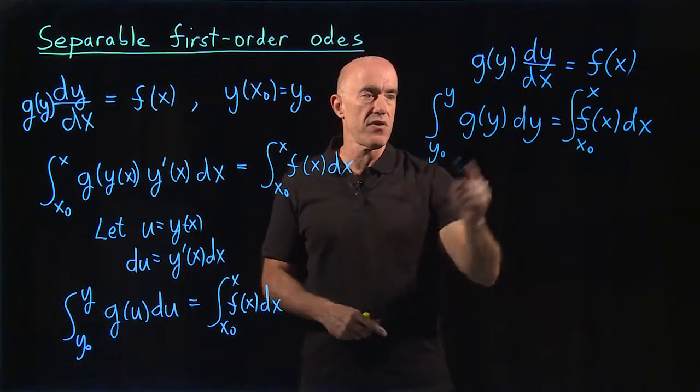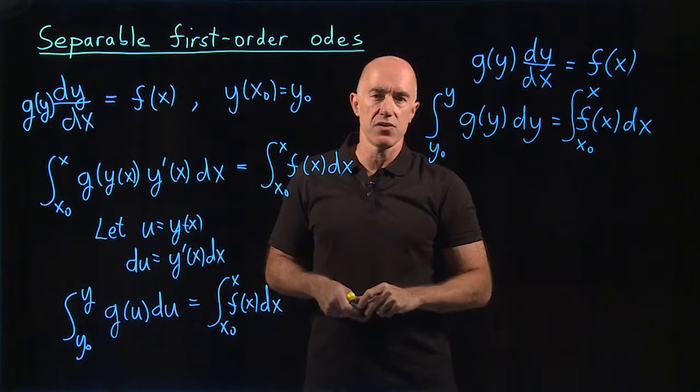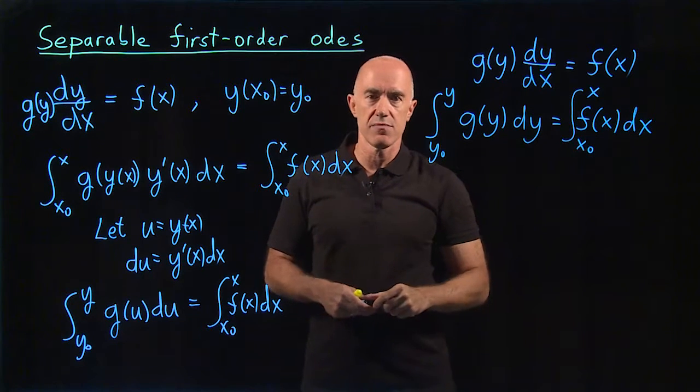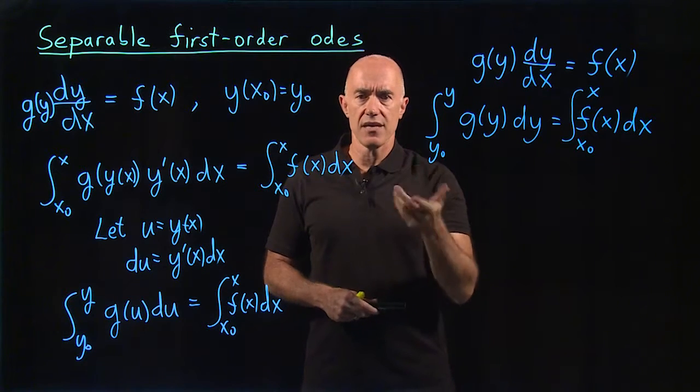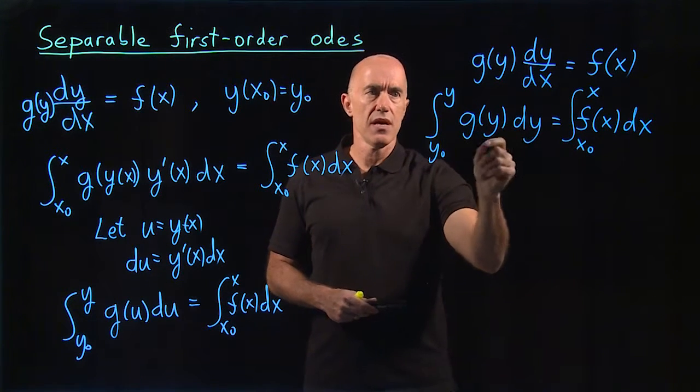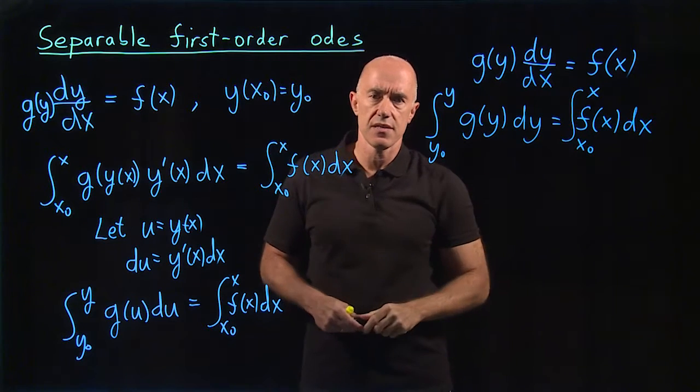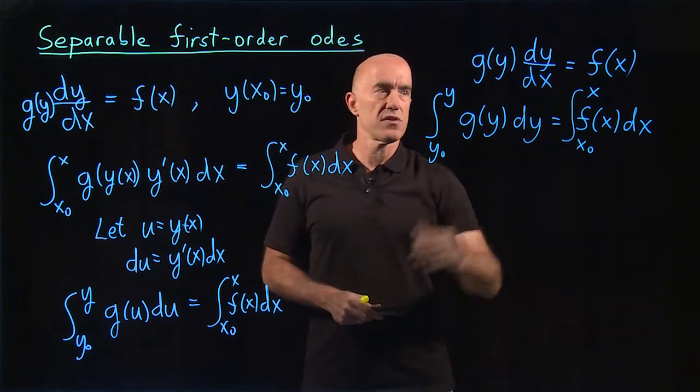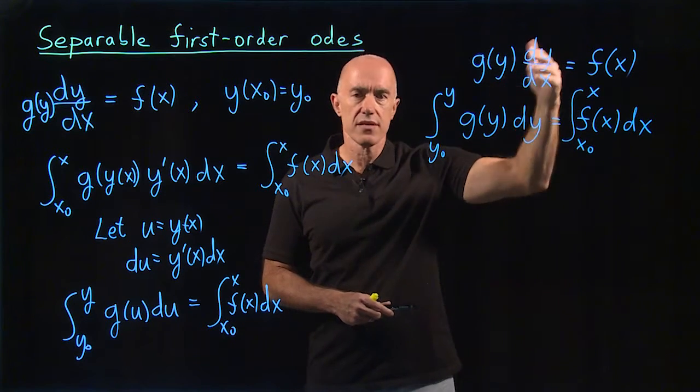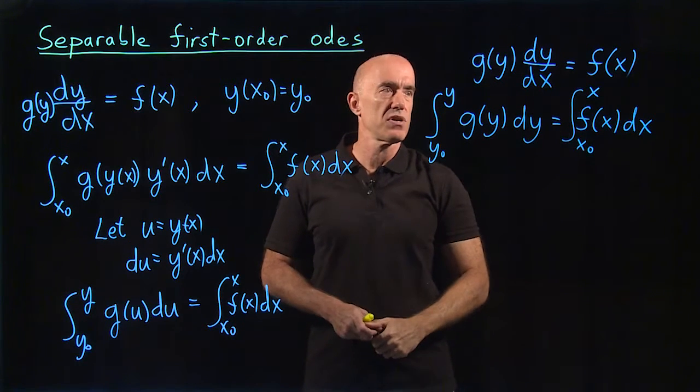Here, u is a dummy variable, so it commonly just uses y as the dummy variable. Y inside the integral has no meaning other than a holding variable, and the true y here is in the limit. So that's the very quick solution of a separable equation.